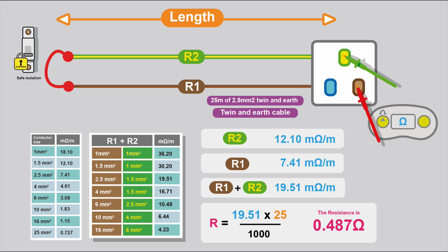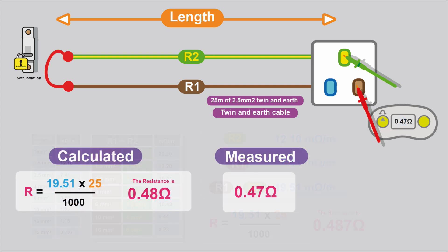And at the socket, you'll take your reading between the line and the CPC, and you'll record that reading as your R1 plus R2 for that circuit. And if we actually calculate that value, 2.5 line conductor and 1.5 millimetre squared CPC gives us a milliohms per metre of 19.51. It's the same maths as before. The resistance of that circuit is 19.51 times 25, it's 25 metres in length, divide by 1000, and it gives us a resistance of 0.487 ohms.